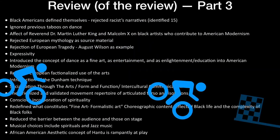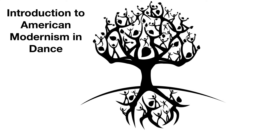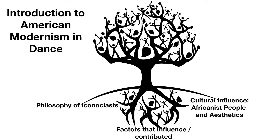We're done! This is the review of part three. What I've talked about in all three lectures: the philosophy in lecture one, the factors that influenced or contributed to American modern dance in lecture two, and the cultural influences—specifically African peoples and aesthetics—in lecture three. I want you to see this as the root of modernism as evidenced in American modern dance. As these things feed this tree, we're going to have contact improvisation, contemporary dance, et cetera.